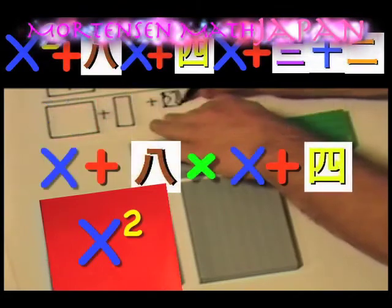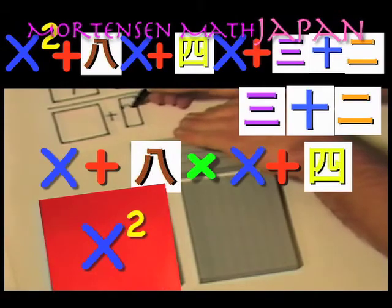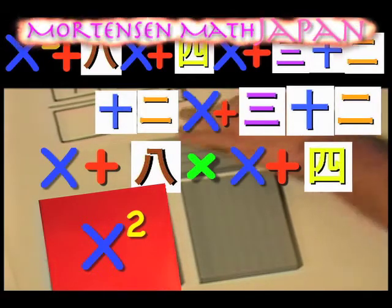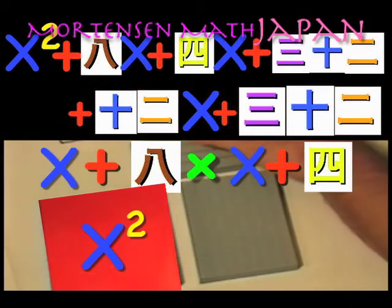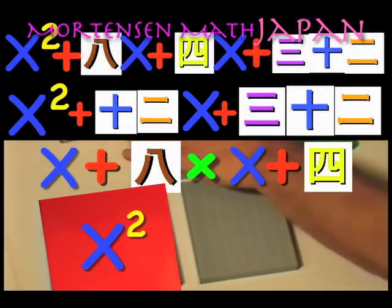Totally, we have 32 units, 12x's. Let's make that a little clearer. 12x's. And here we have x squared.